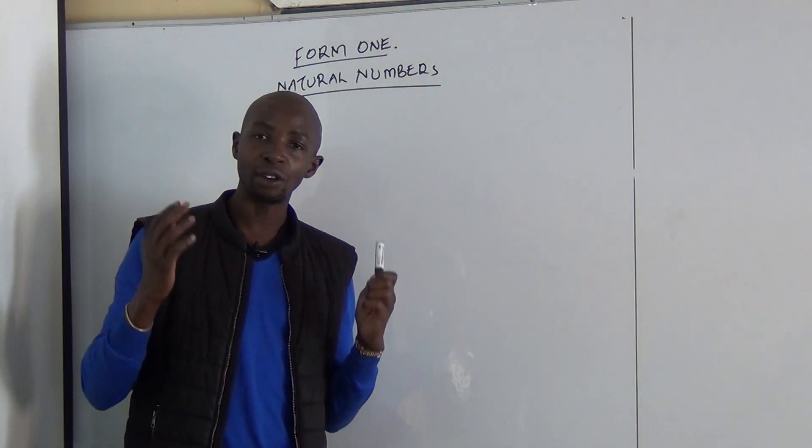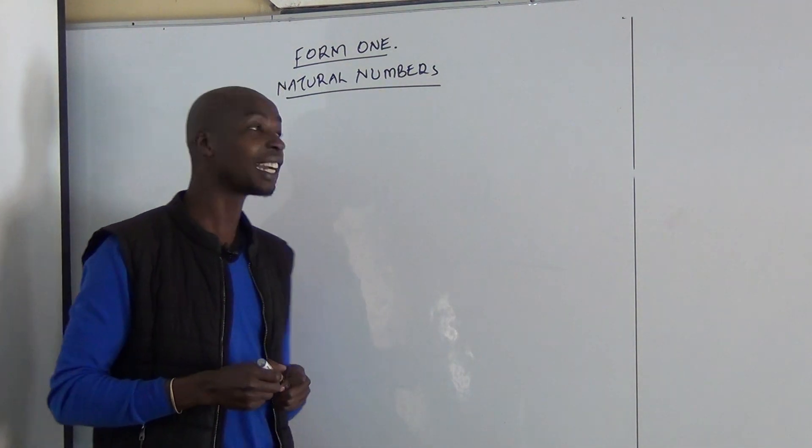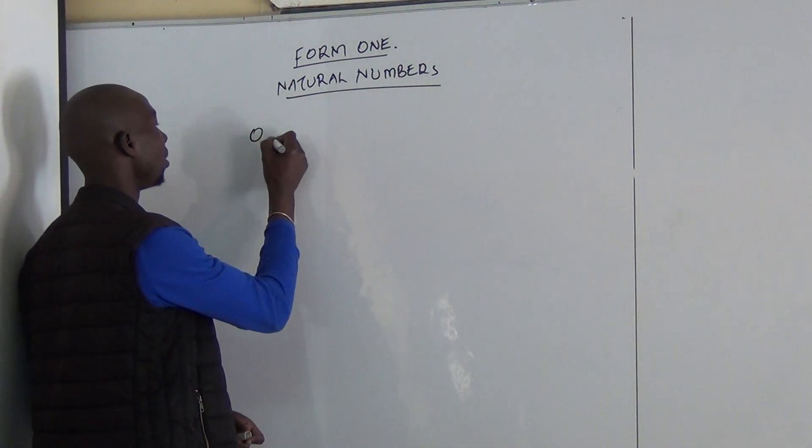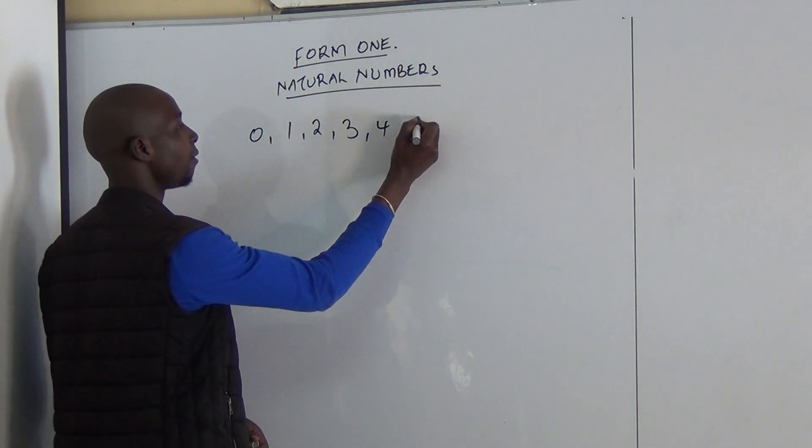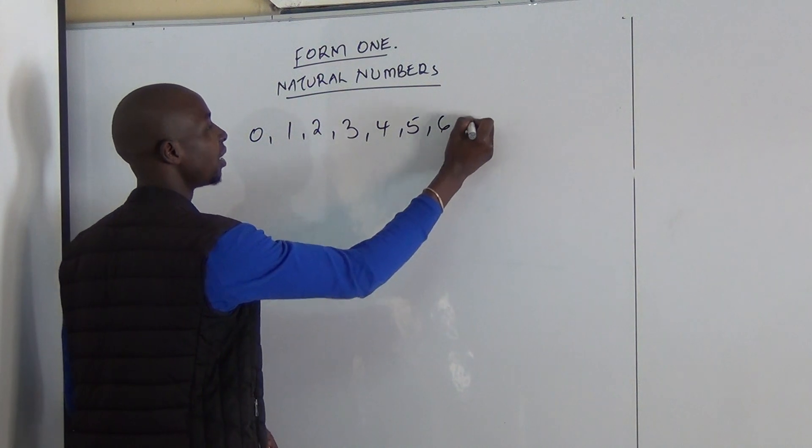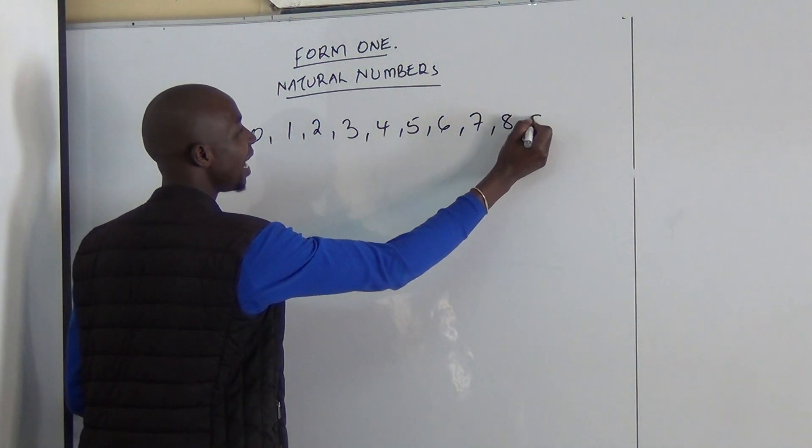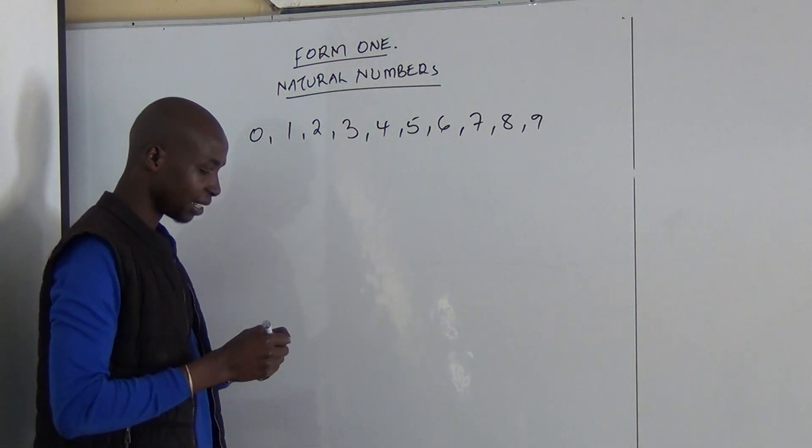The symbols are also called digits and they include 0, 1, 2, 3, 4, 5, 6, 7, 8, and 9. 9 is the last one.